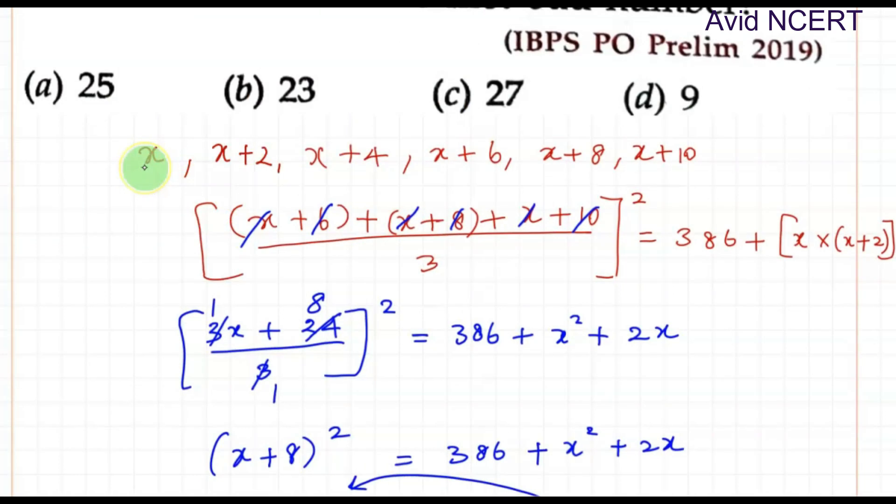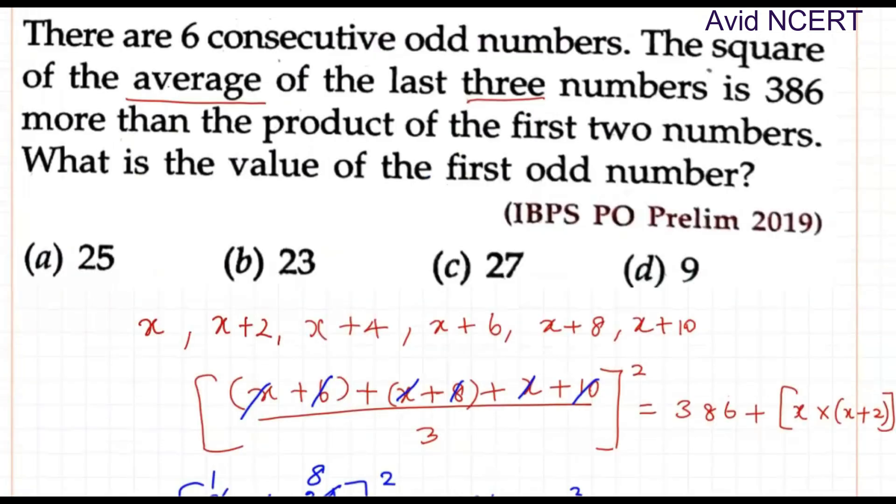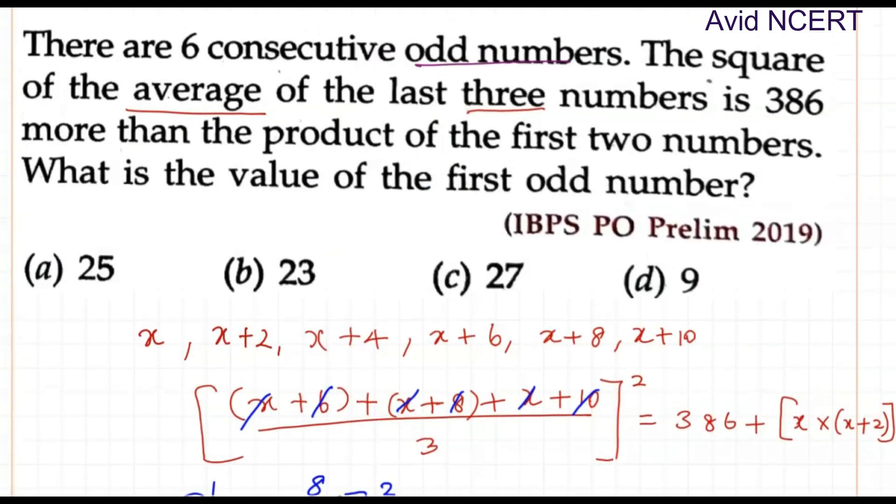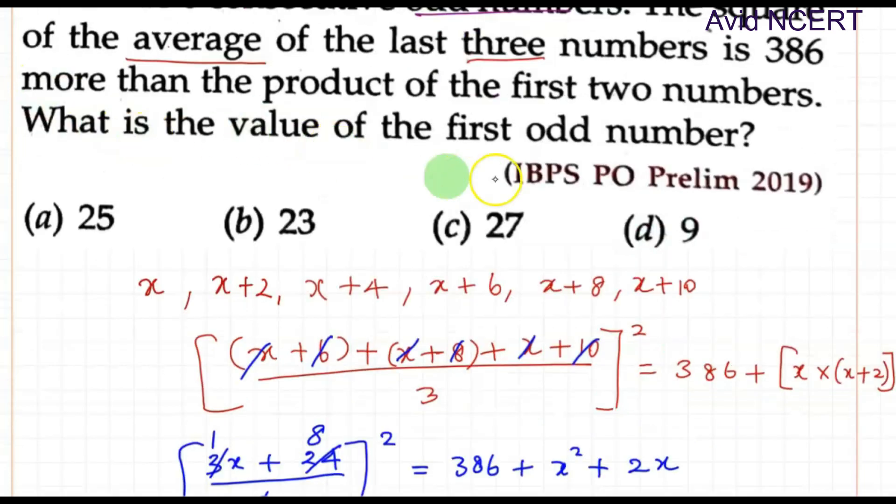So x equals 23, which means the first number here is x is 23, so the remaining numbers would be 25, 27, 29, 31, and 33. Odd numbers means the numbers that are ending with 1, 3, 5, 7, and 9, or you can remember as a number which is not ending with the even number like 0, 2, 4, 6, 8.